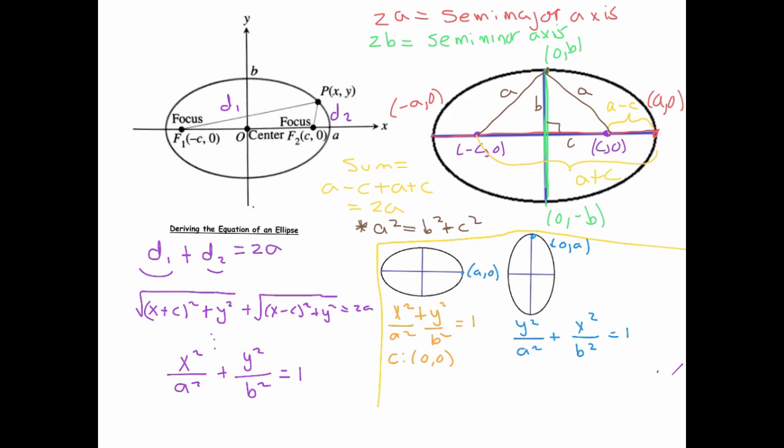The foci would have coordinates (±c, 0) and the vertices (±a, 0) for the horizontal orientation. In the vertical orientation, the center would still be at the origin. The foci would have coordinates (0, ±c), and the vertices would have coordinates (0, ±a).